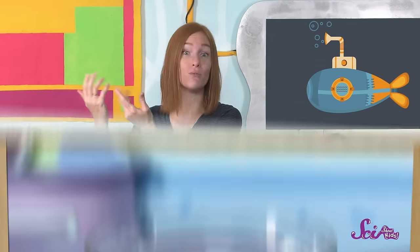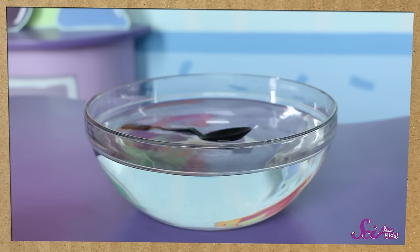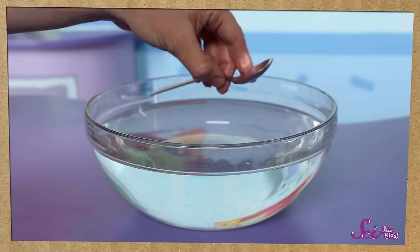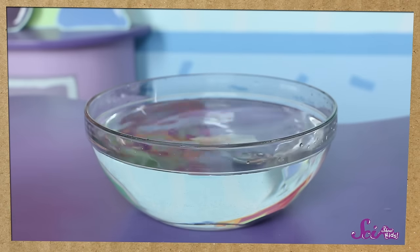We learned that whether something floats depends on its density, or how heavy it is for its size. If it's heavier for its size than water, it sinks. If it's lighter, it floats. For example, a plastic spoon isn't very heavy for its size, so it floats. But a metal spoon is pretty heavy for its size, so it sinks.